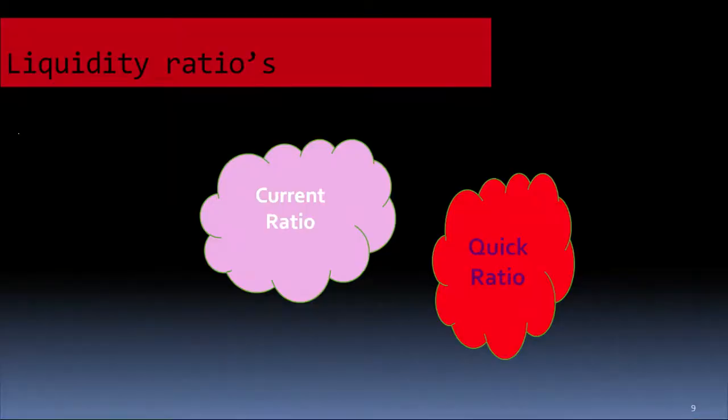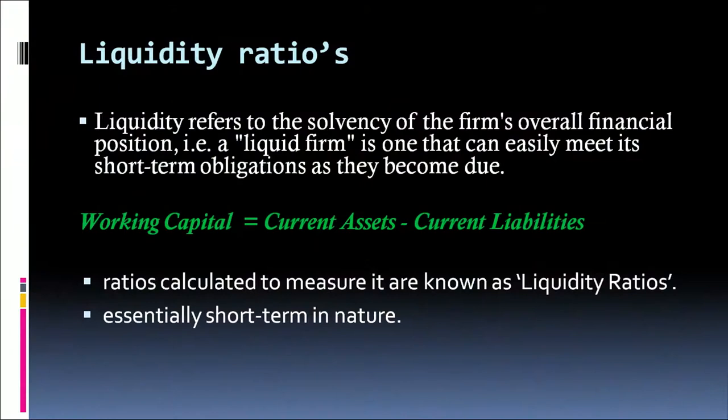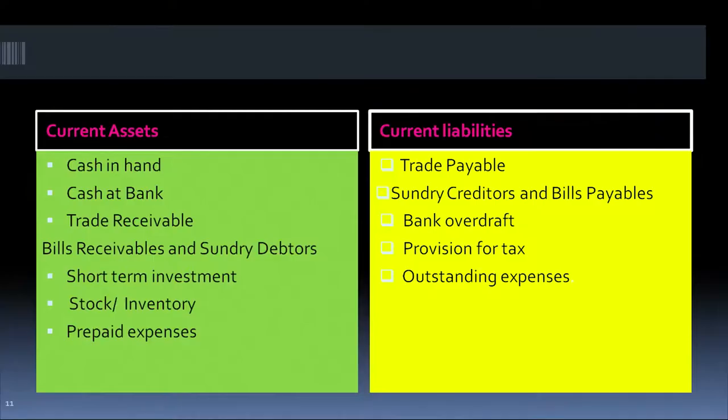So we come to the first kind of ratio — the liquidity ratio. In this, we will study today the current ratio and the quick ratio. Liquidity ratios help us identify the short-term solvency position of the firm, which means we are talking of current assets and current liabilities. Current assets include cash in hand, cash in bank, bills receivables, trade receivables, debtors, short-term investments, stock or inventory, prepaid expenses, advance tax, and so on.